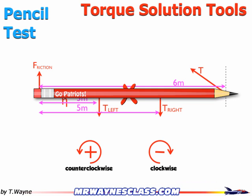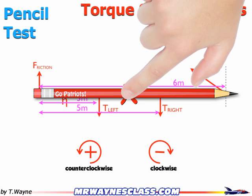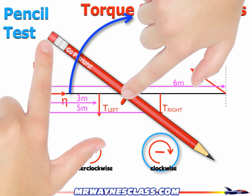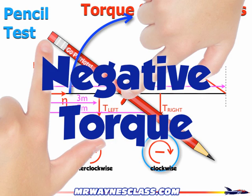The pencil test works like this: I take my pencil and hold it in place of the beam. I take one finger and hold it on top of the pivot point, and then take my other finger and hold it where there's a force I want to investigate. I push with a force where that finger is located. From this example I get a clockwise rotation, and clockwise rotation is a negative torque. So mathematically I know the sign of my torque will come out to be negative.